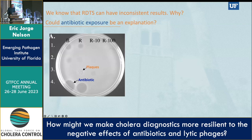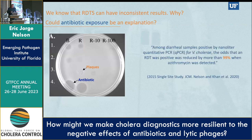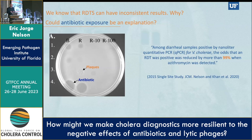With this background, we looked in a 2015 study at a single site in Bangladesh in which we did APW grow-out RDTs. Among diarrheal samples positive by nanoliter qPCR for cholera, the odds that the RDT was positive was reduced by more than 99% when azithromycin was present and detected by mass spec. The next question was how lytic phage — viruses that infect and kill cholera — would affect this. We found that among diarrheal samples positive by nanoliter qPCR, the odds that an RDT was positive was reduced by 89% when lytic phages were present.